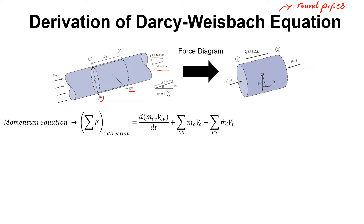We are going to single out the control volume and put all the forces acting on it. We'll start with pressure forces because they are the most obvious. The left-hand side pressure force would be P₁, or pressure at section 1, times the cross-sectional area of the cylinder. And P₂A is the pressure force at section 2, or the right end of the cylinder.